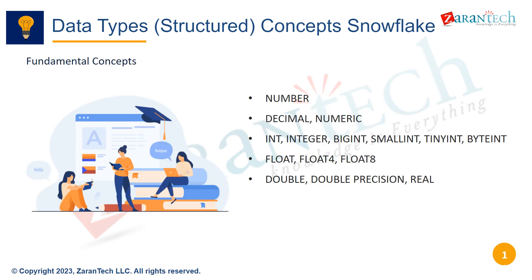Snowflake supports NUMBER, DECIMAL, and NUMERIC for fixed-point numbers up to 38 precision. INT, INTEGER, BIGINT, SMALLINT, TINYINT, and BYTEINT for different sizes of integer values. FLOAT, FLOAT4, FLOAT8 for single precision floats, and DOUBLE, DOUBLE PRECISION, and REAL for double precision floating point numbers. Each has specific ranges, storage sizes, and usage scenarios.